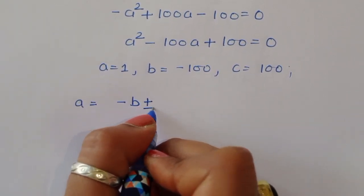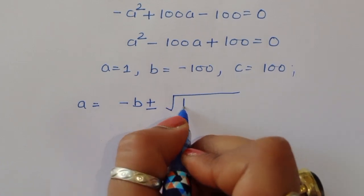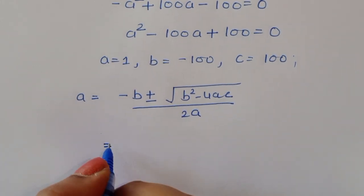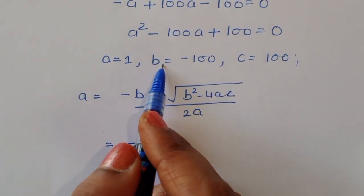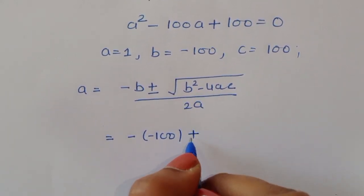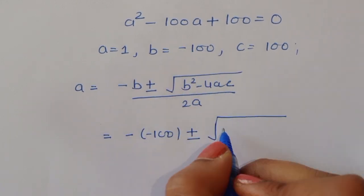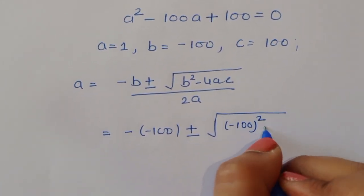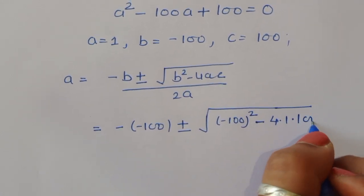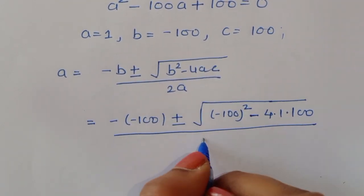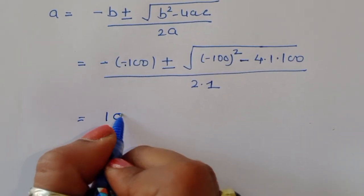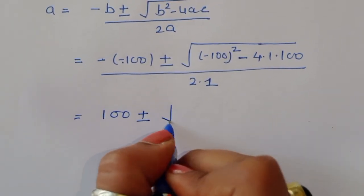We use the quadratic formula: a equals minus B plus or minus the square root of B squared minus 4AC, all divided by 2A. Substituting: minus of minus 100, plus or minus the square root of (minus 100) squared minus 4 times 1 times 100, divided by 2 times 1.